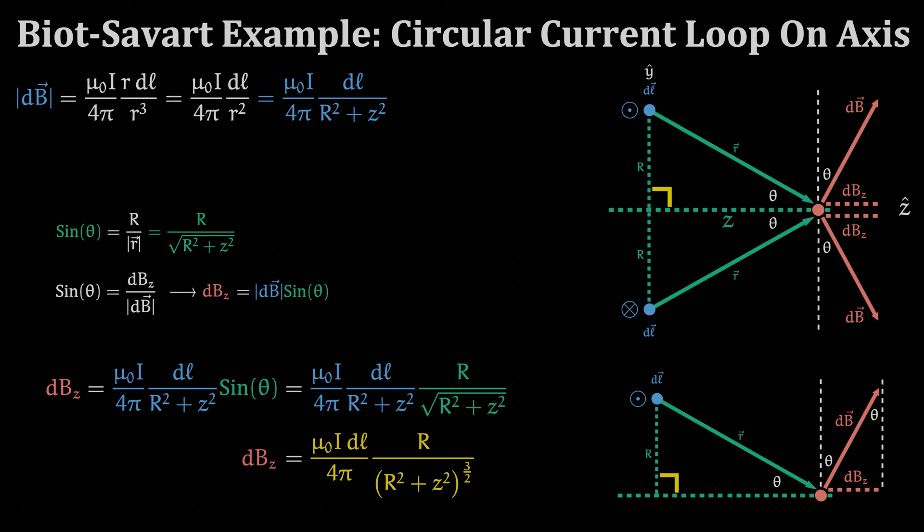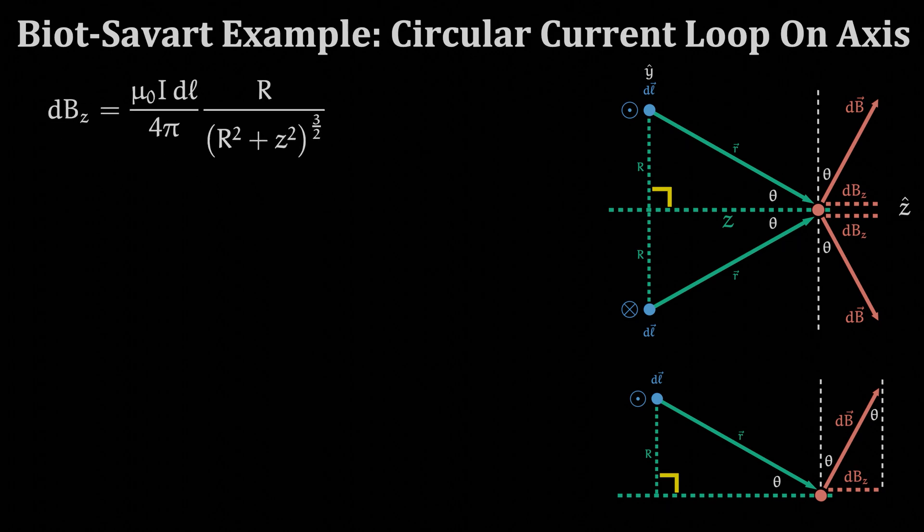Now to get the full z component of the B field, which is the only non-zero component, we need to integrate this infinitesimal piece dBz. The circle on the integral symbol is indicating that we are traversing the entire path of a closed loop, in this case the wire loop itself.